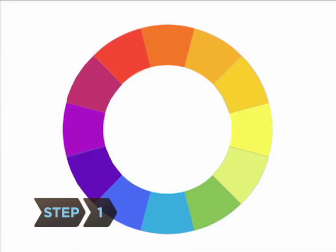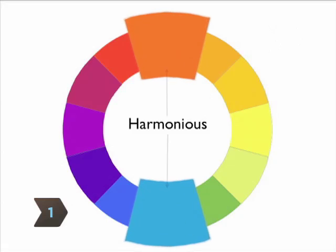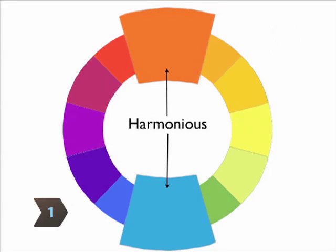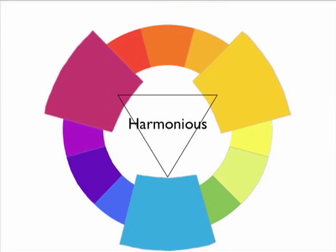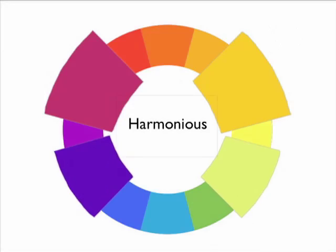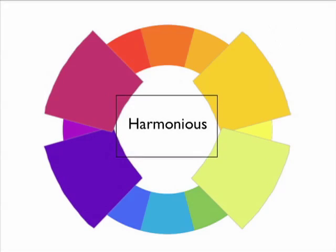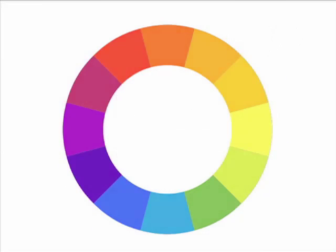Step 1. Study color theory using a color wheel. Two colors opposite on the wheel are considered harmonious, as are three colors that form a triangle and four that form a rectangle.